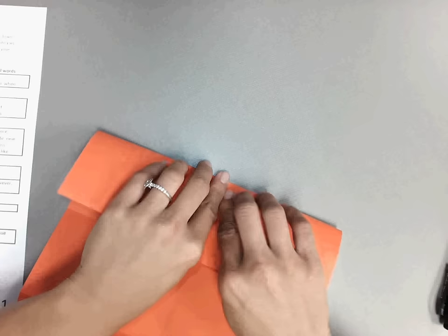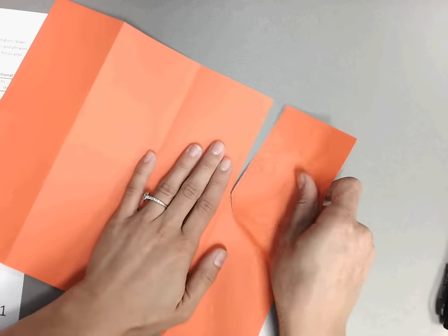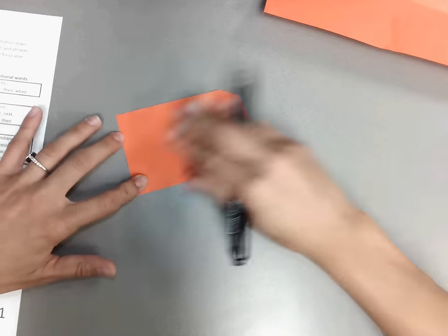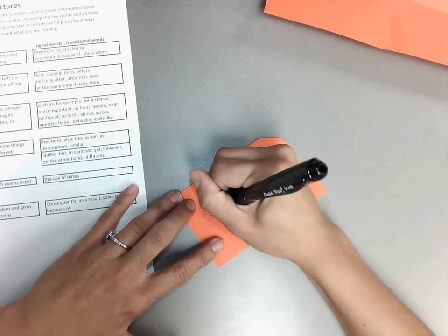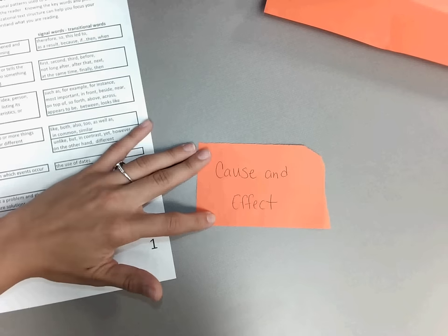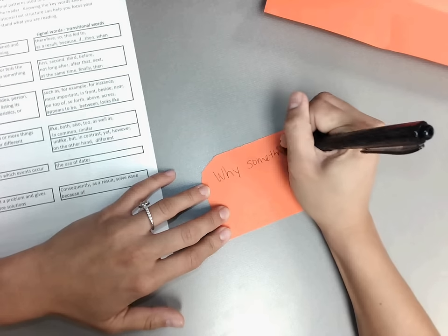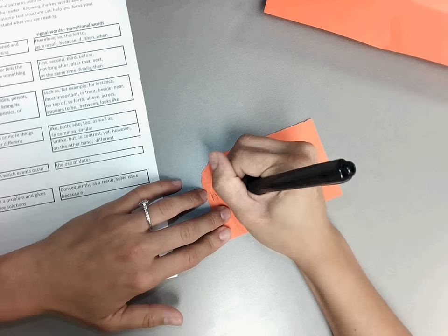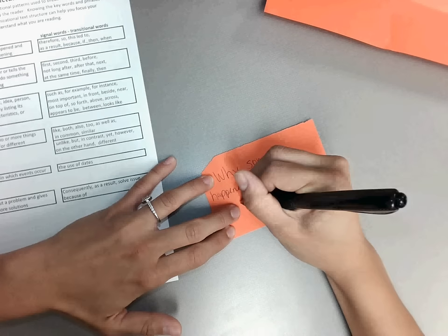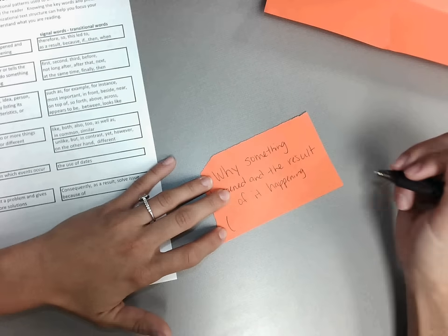Okay, so back to our note cards. Let's say that we have cut out all our note cards. You guys will use scissors, so they won't actually be cut nicely. And on one side, on the front, you're going to write your text structure. Then you're going to flip it over. And on the back, you're going to write your explanation and in parentheses, our signal words.